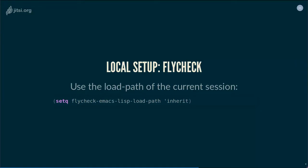Something very important for this setup is to configure the variable 'flycheck-emacs-lisp-load-path' to the value 'inherit'. This is important because otherwise, FlyCheck starts a new Emacs, opens your file in it, and tries to byte-compile it. But if it can't find the dependencies of your file, it will complain every time you make a reference. For example, if your package references a Magit function, it will underline it in red because Magit is not loaded in the Emacs that FlyCheck uses. To make sure the guest Emacs has the same load path as the host Emacs, you must pass the 'inherit' value.